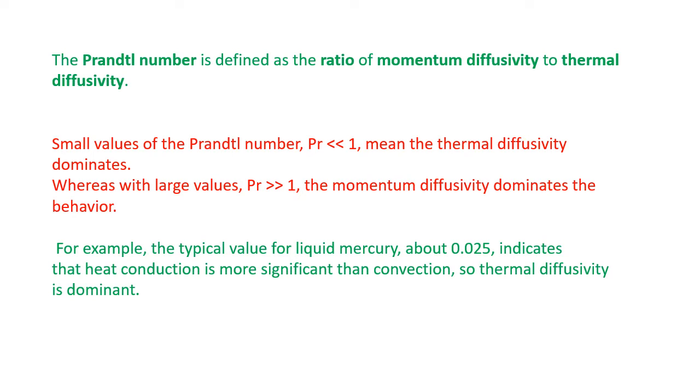If the values of the Prandtl number is less than 1, then the thermal diffusivity dominates. And if it is greater than 1, then momentum diffusivity dominates. For example, in the case of the liquid mercury, the value of thermal diffusivity or the Prandtl number is 0.025, which indicates that heat conduction is more significant than convection. So, the thermal diffusivity is dominant.